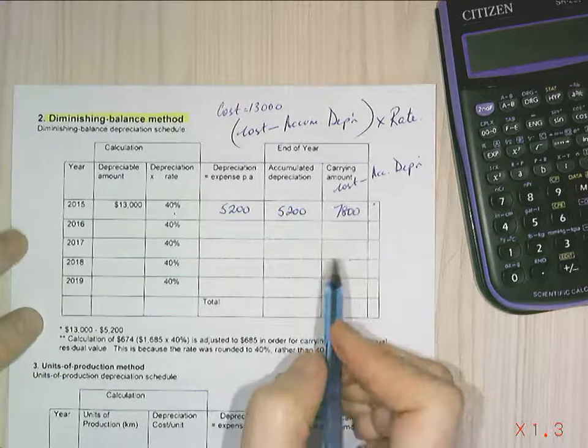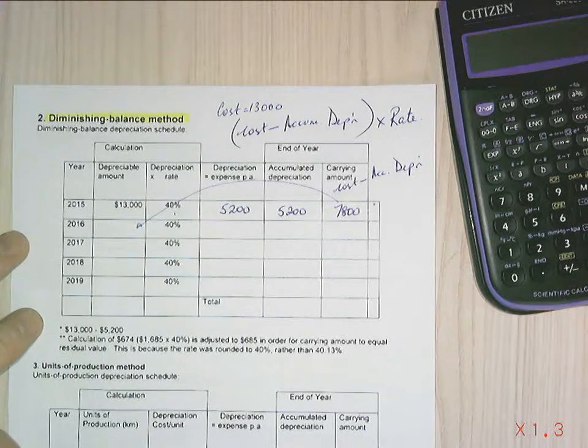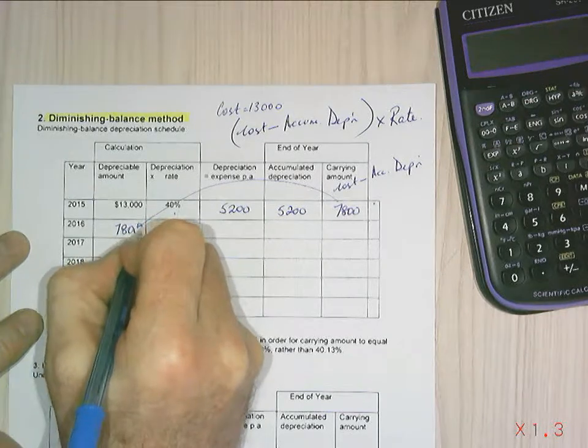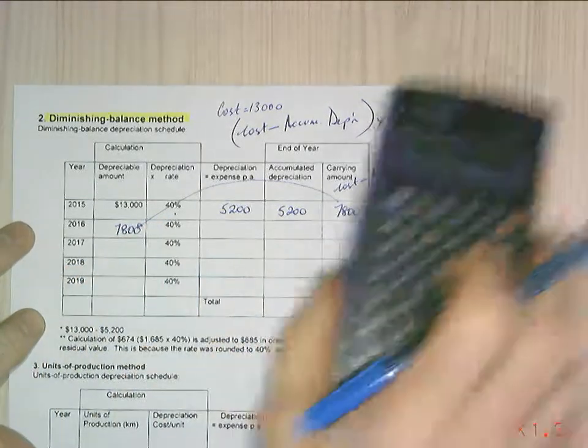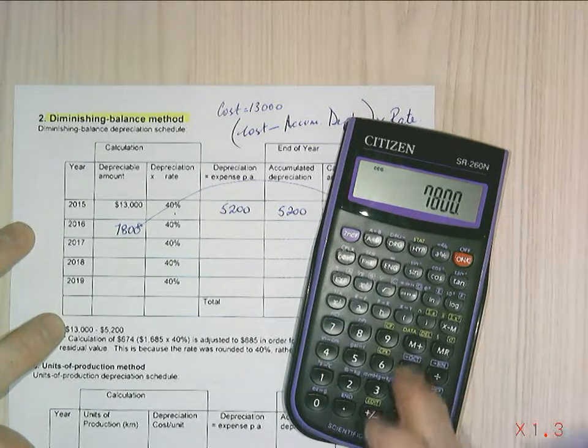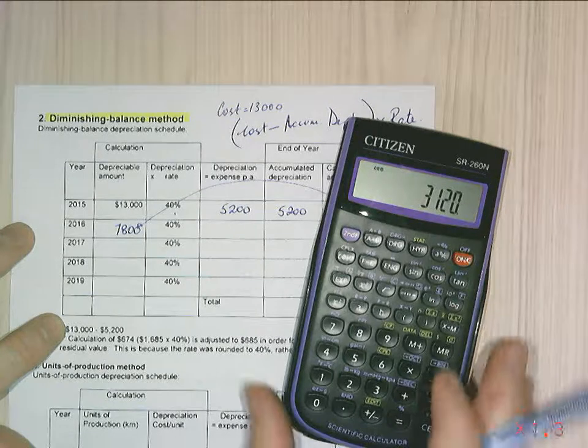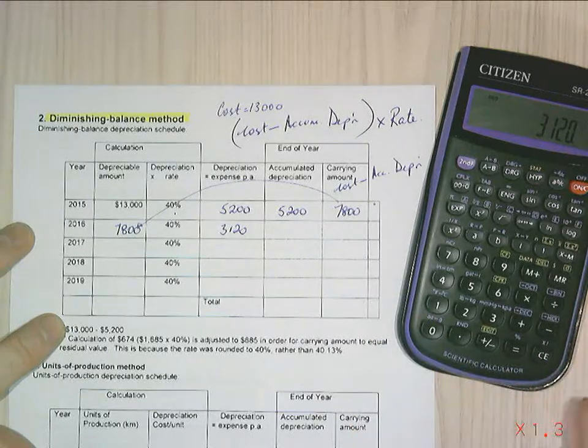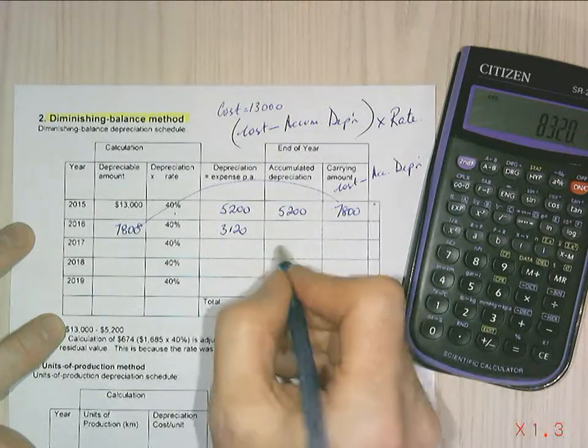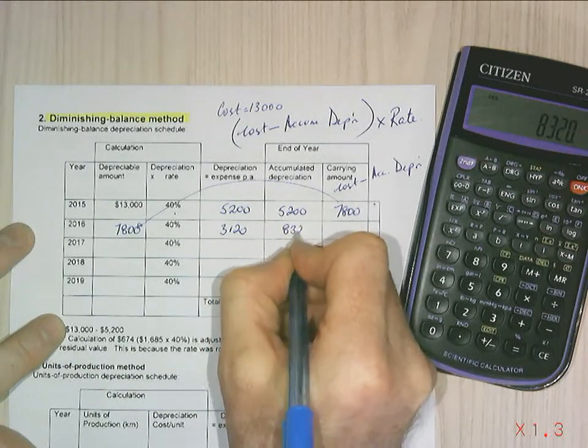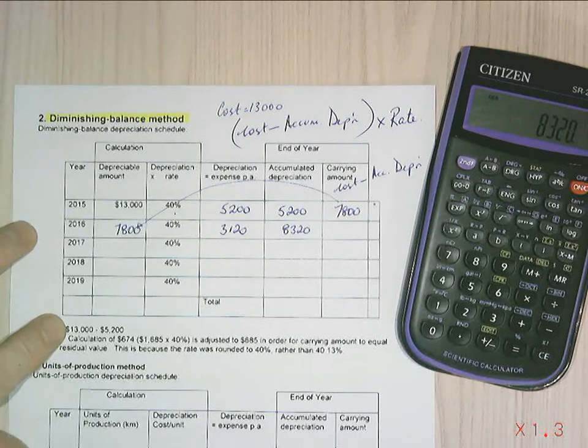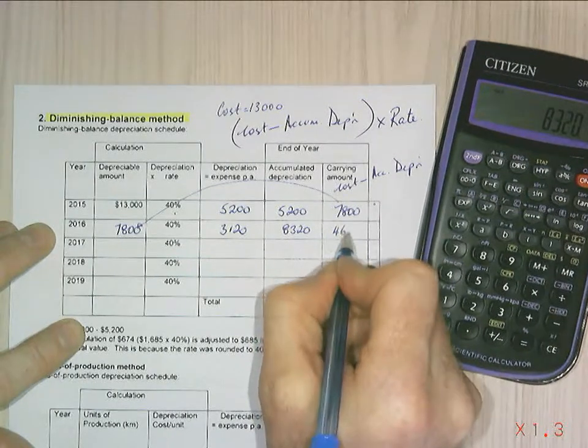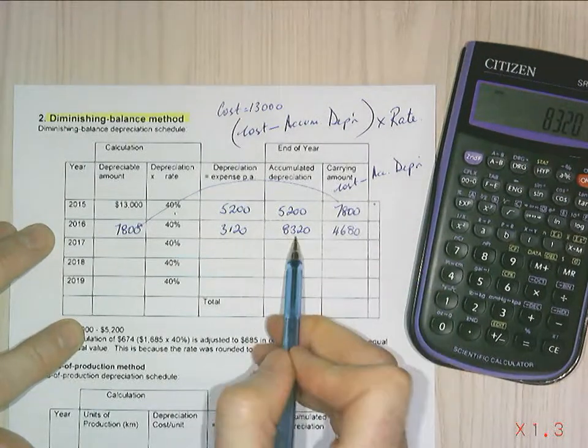Now my depreciable amount for the next year is my cost minus my accumulated depreciation. So that $7,800 becomes my depreciable value the next year. And I'm going to apply it to my 40%. So I've got $7,800 times 0.4, and that equals $3,120. I'm going to add that to my $5,200, and that comes in at $8,320. And my carrying amount would then be $4,680, being my $13,000 less $8,320.